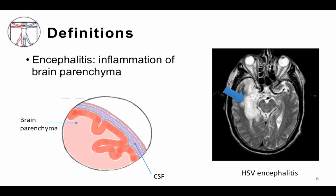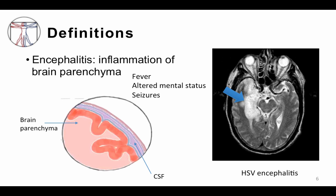Encephalitis is different — it is inflammation of the brain itself and not necessarily the meninges. You can see here in this MRI scan a patient with HSV encephalitis, with enhancement and edema of the temporal lobe of the brain. Here, you may or may not see fever, but you will frequently see altered mental status, which can be subtle — word-finding difficulty, not making sense — or may include delusions and other psychiatric-type symptoms.